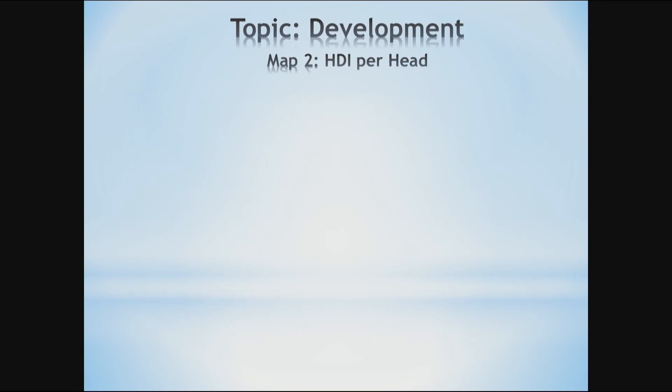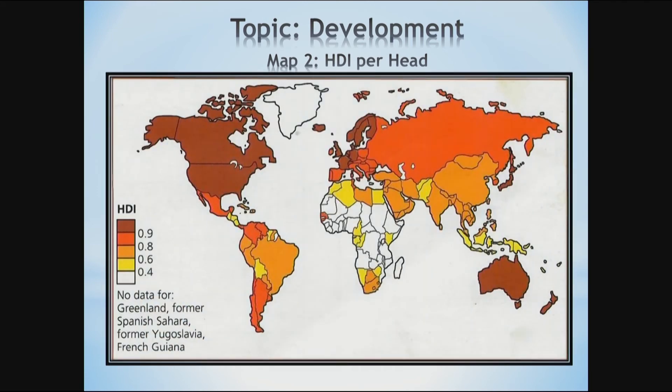Next, we are going to look at Map 2, showing HDI per head. Since 1980, the UN has used HDI to measure levels of development, and they believe this is a more reliable and accurate measure of development than GNP. Why? Because it measures three indices of well-being: life expectancy, literacy and schooling, and GNP relating to local purchasing power.